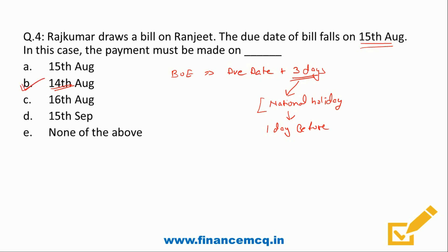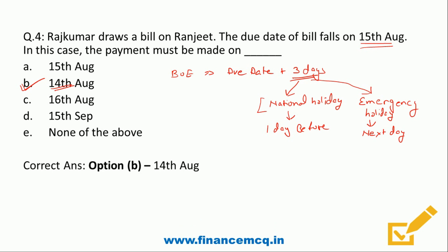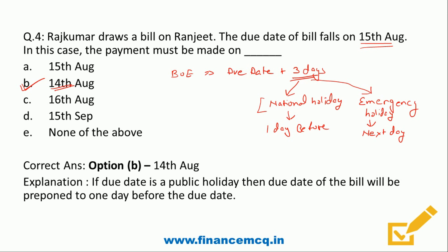Another situation: if the due date comes on an emergency holiday — such as a strike, riots, or any situation where banks are forced to close — then the due date will shift to the next day, which would be 16th August. But always remember: for a national holiday the due date is one day before. So the correct answer remains option B, 14th August.